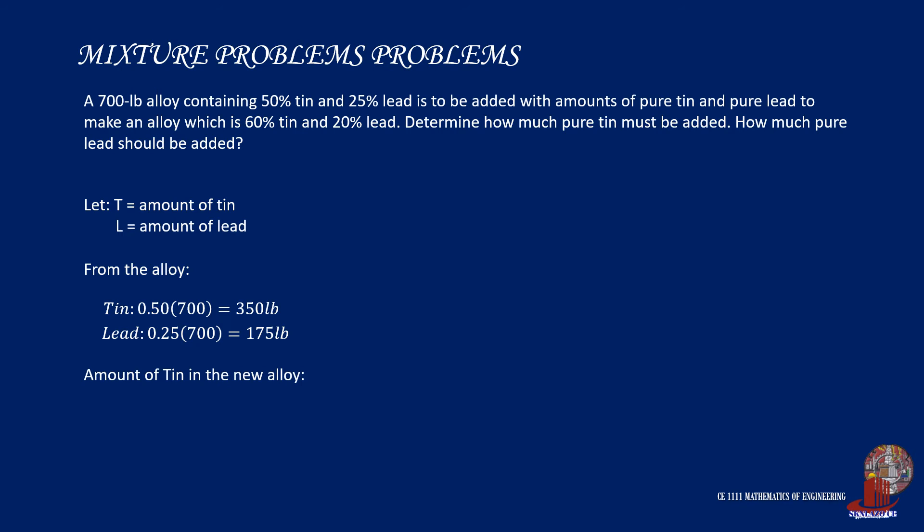Let us formulate our equations. Separately, if we consider tin, we can check the total amount of tin in the alloy which will comprise 60% of the total mass. By expanding the terms, we get T plus 350 equals 0.6 of T plus 0.6L plus 420.